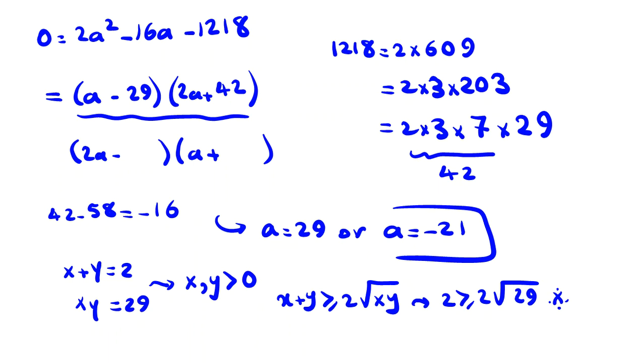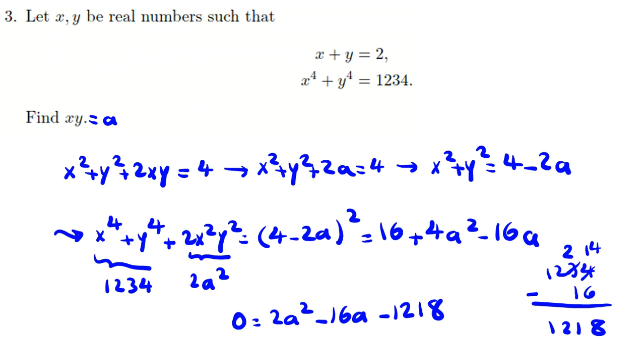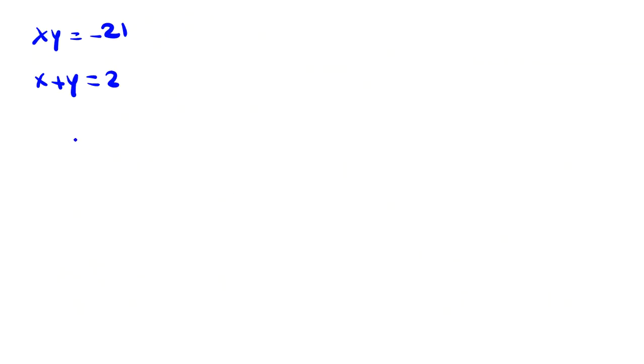Also for this case, if you want, you can finish the problem. We've reached the solution. But also if it is in round two or some national level, you want to check by yourself. You have time, you want to check is it correct or not. You can say okay, xy is negative 21, x plus y equals 2, and x to the power of 4 plus y to the power of 4 is 1234.